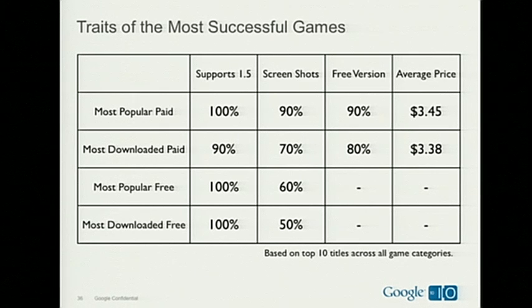Pretty much all of those top apps are backwards compatible to Android 1.5 — that's a big deal since there are a lot of users still on 1.5 or 1.6. Almost everybody has screenshots in their market listings, which is a really big deal because users want to see what they're getting before downloading, even if it's free. The most-downloaded free list has fewer screenshots — about 50% — possibly because those apps predate our market screenshot system. For paid apps, most supply a free or 'lite' version, and the average price for the most popular paid apps is less than $3.50.